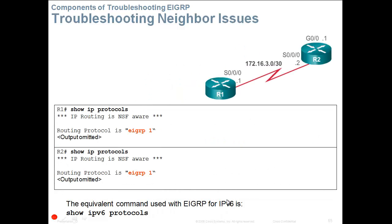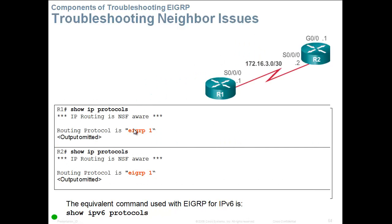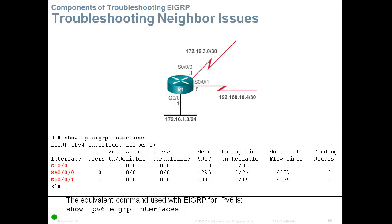Then we check the autonomous system number to make sure it matches, because the AS number must match. Show IP Protocols on Router 1 shows EIGRP 1. We do the same on Router 2 and confirm it is using the same AS number — so that's not the problem. Next command, Show IP EIGRP Interfaces: we can see which interfaces have been enabled for EIGRP. G0/0 is enabled with no peers, Serial 0/0/0 is enabled for EIGRP, and Serial 0/0/1 is also enabled for EIGRP.